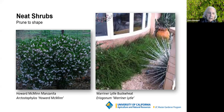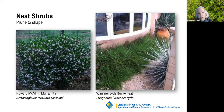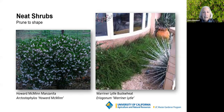The Howard McMinn manzanita has been in the trade since around 1980. It can be sheared with electric hedge shears or pruned up into a beautiful little tree. You can do just about anything with it as long as you're careful about the timing of your pruning. The Warner Lytle buckwheat is a great pollinator plant with nice little flowers — you can prune it into any shape you want, and it's a nice one for the front yard to keep a really neat shape.